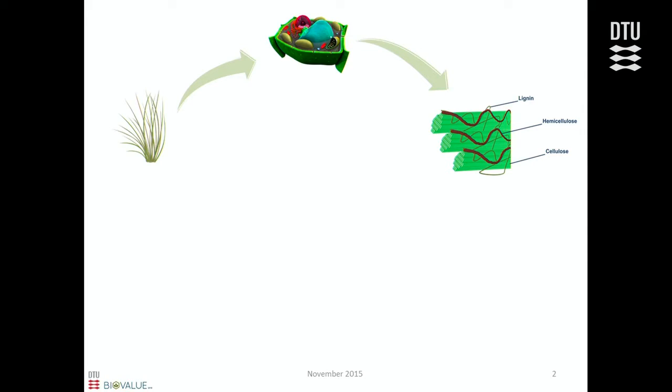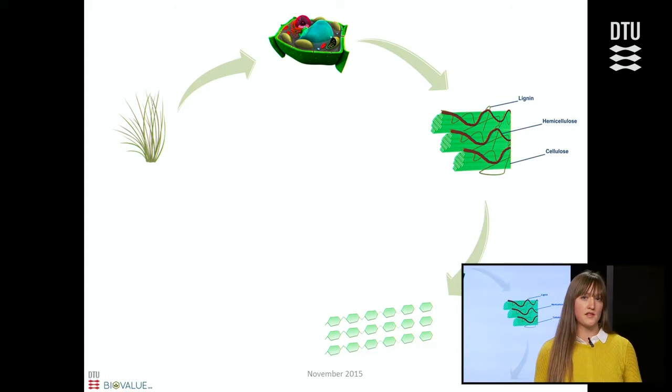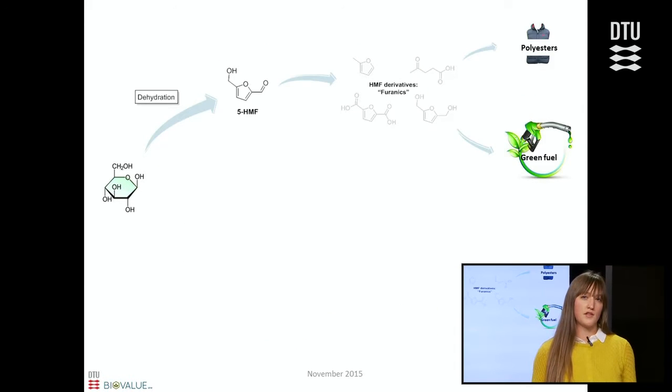What we want to do is isolate these three major components, for example cellulose, and then break it down into smaller units like glucose. And these smaller units can then be converted into different platform molecules like HMF, which can be further converted into different HMF derivatives. These derivatives have proven useful in polymer and fuel industries.